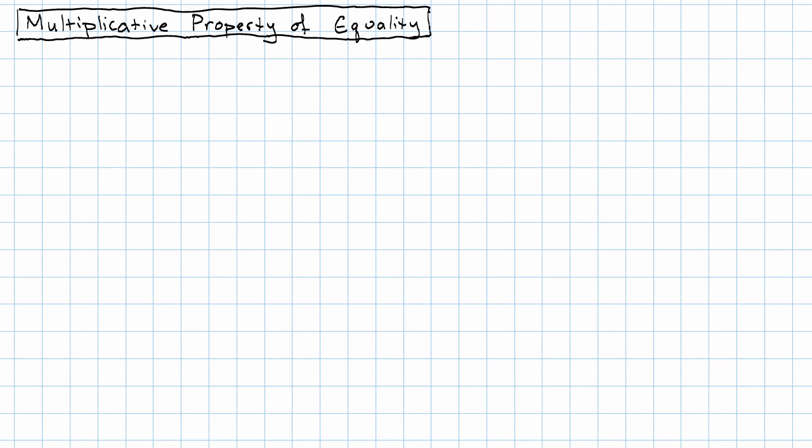Another way we can get equivalent equations is using multiplication. However, multiplication is a little bit trickier. We are allowed to multiply both sides of an equation by the same value, but there are restrictions on what that value can be. Let's see why.